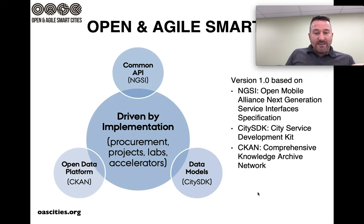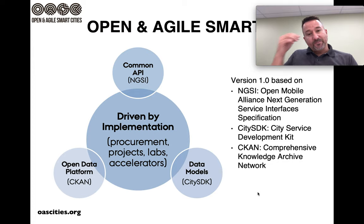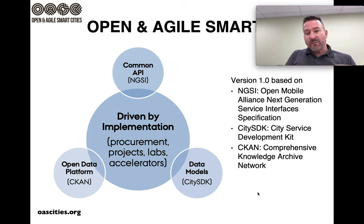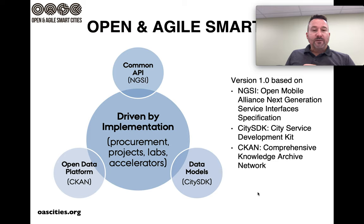As a result, cities that have come together in the community of practice of the Open and Agile Smart Cities network are subscribed to four principles. Three of them are about open standards: there should be a common API, the data should be stored on an openly accessible platform, and the models used to describe the data are also standardized. The fourth principle is to be driven by implementation — demonstrated by actual projects on the ground enacting these three technical principles of openness.